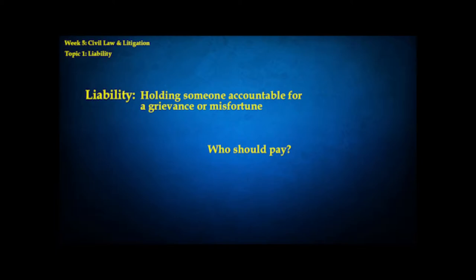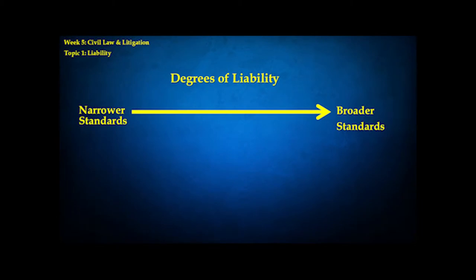A lot of what civil law revolves around is the question of liability. Liability refers to holding someone accountable for a grievance or a misfortune — something bad has happened, I've had an injury, whose fault is it, and who should pay for it? We can think of liability as a quantitative variable, a matter of degree defined by how broad it is. At one end of the spectrum, you have very narrow standards of liability — it's very difficult to hold someone responsible. At the other extreme, you have much broader standards where it's very easy to be held responsible.